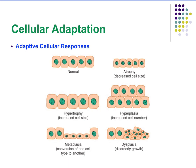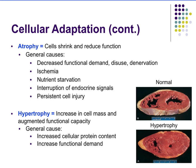Let's move on to adaptations our cells can undergo in response to altered demand. In comparison to normal cells: atrophy means cells get smaller in size; hypertrophy means individual cells increase in size; hyperplasia means cells stay the same size but increase in number; metaplasia is conversion from one cell type to another; and dysplasia is a disorderly growth of cells.